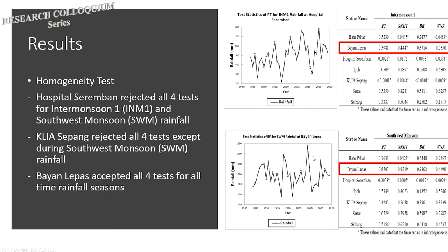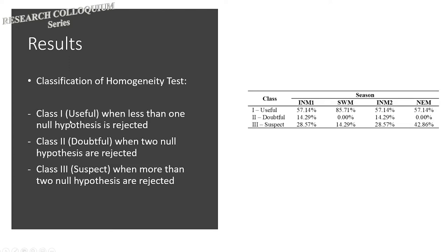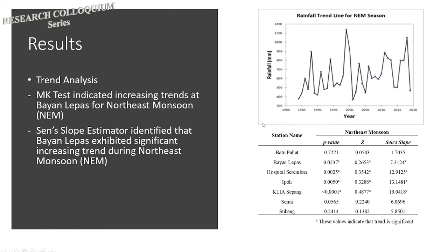In contrast, the Bayan Lepas rainfall is homogeneous for all four seasons. From these results, we can further classify the seasonal rainfall data based on the homogeneity test into: class one (useful) when less than one test is rejected, class two (doubtful) when two tests are rejected, and class three (suspect) when more than two tests are rejected. The table shows the percentage of rainfall stations classified into their respective classes for each rainfall season.